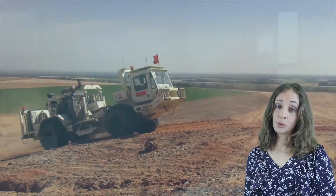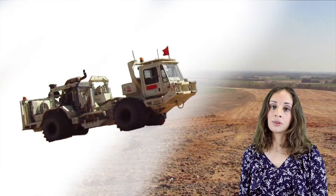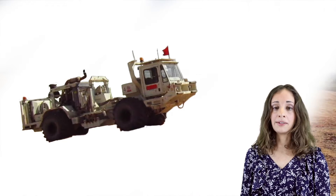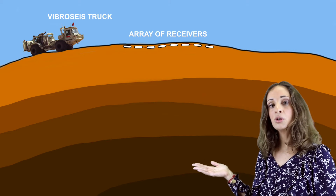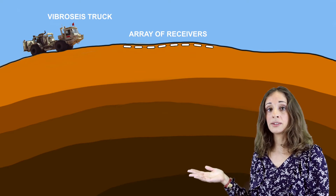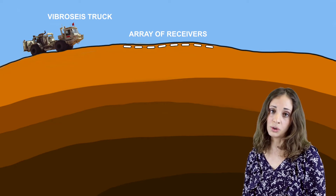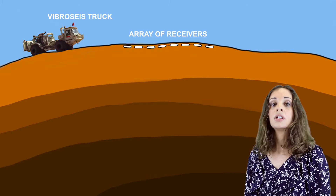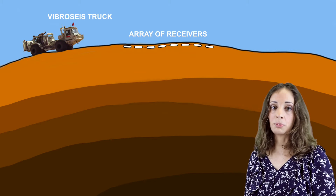An acoustic source produces elastic waves spherically propagating through the Earth. Such waves travel in the subsurface until they reach a discontinuity that, in our case, could be represented by an interface between two different lithologies that are characterized by different rock properties.